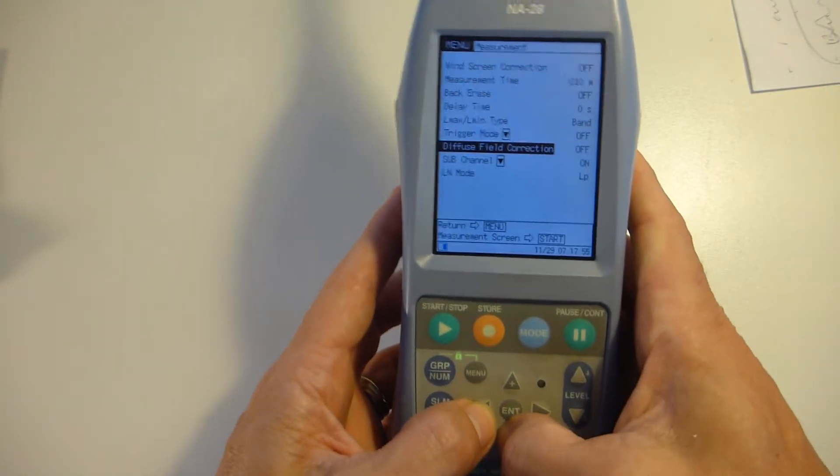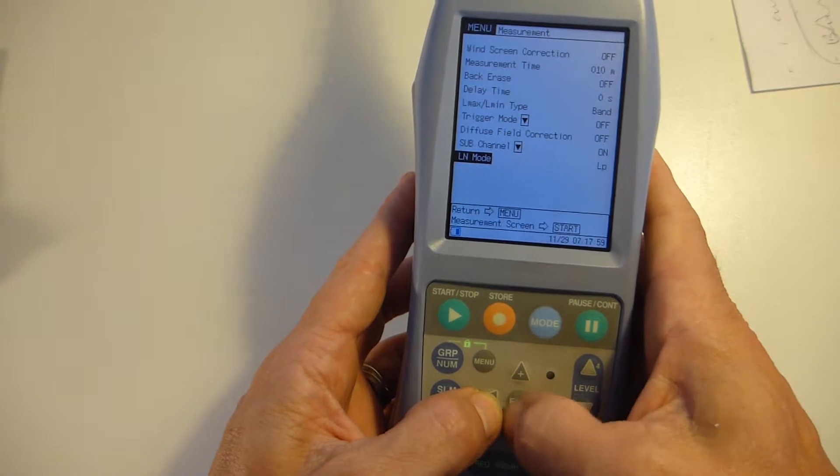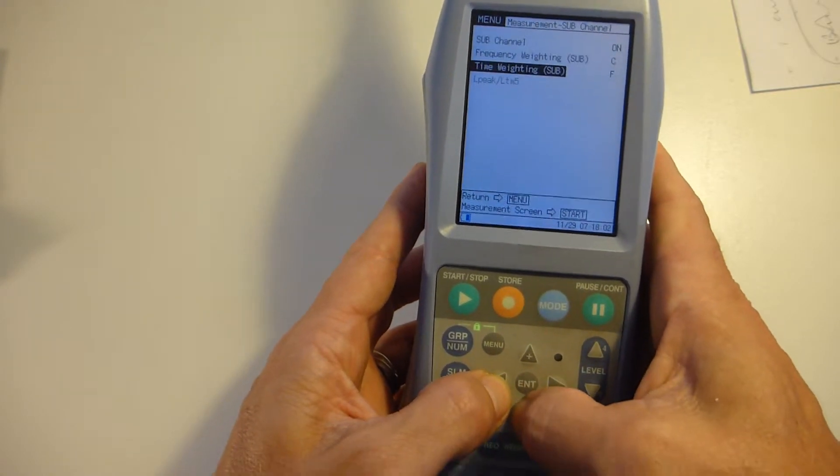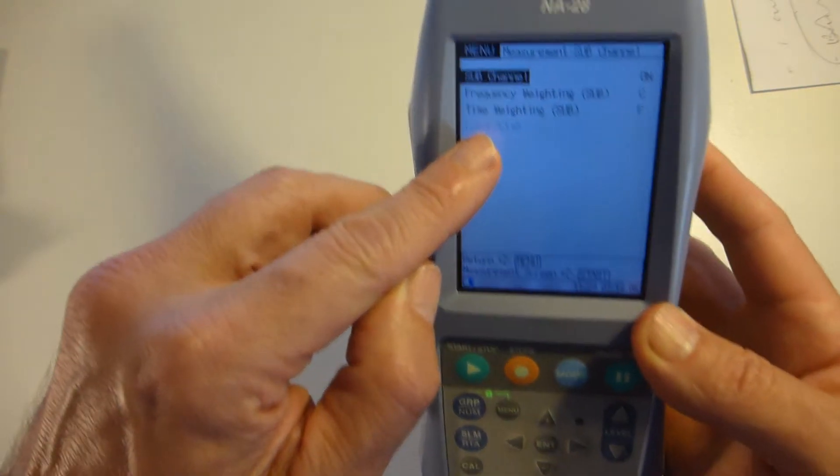What you'll find is that if you are in single or third octave mode, you cannot select L peak or LTM 5. So you'll see that that's grayed out. It's not you, it's a design fault.